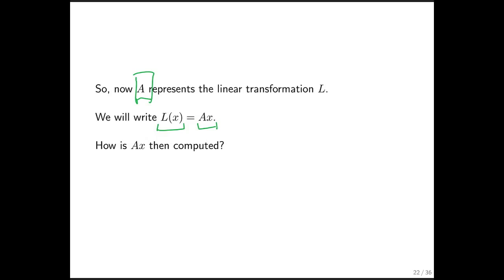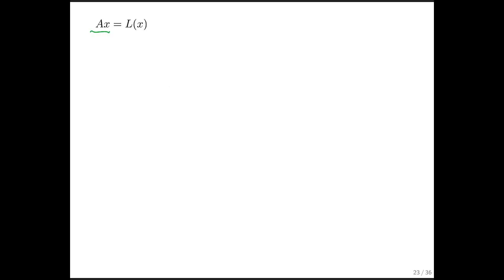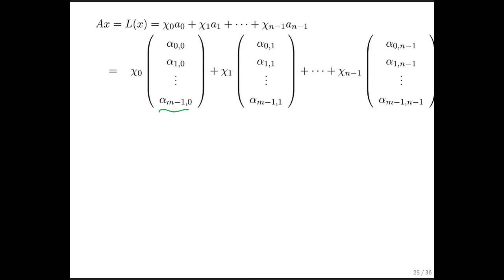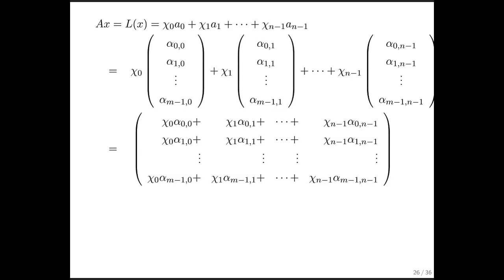Once we have the matrix that represents the linear transformation, we can use the notation A times x to mean L evaluated at x. Matrix-vector multiplication, which you've probably seen in another math class or physics class, is defined the way it is because it has exactly the same net result as applying the linear transformation to the vector x. A times x is the same as L of x — it is the linear combination of those columns of matrix A. If we expose the individual entries of those columns, we get a scalar times a vector plus a scalar times a vector, etc. — that's a linear combination.